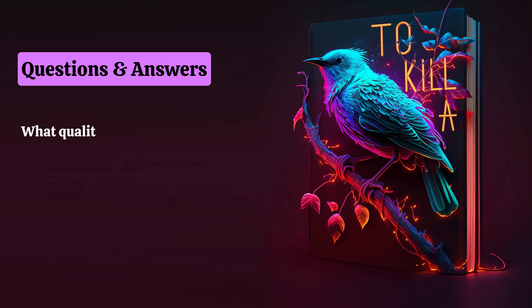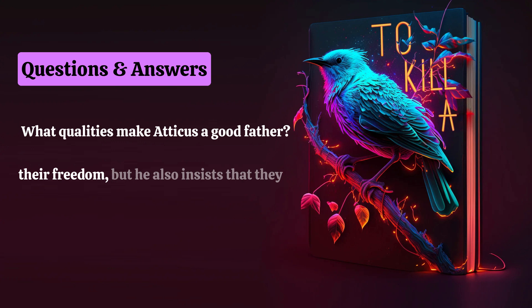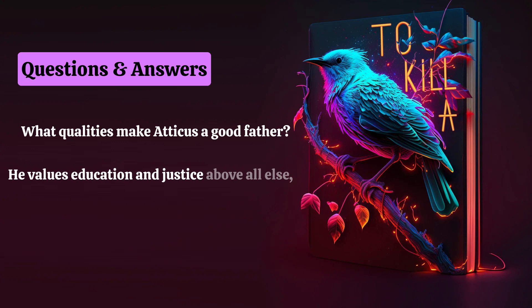What qualities make Atticus a good father? Although Atticus is an old father according to Scout, he dearly loves his children, Scout and Jem, and offers them a role model of integrity, wisdom, trust, and honesty. He lets them be children by giving them their freedom, but he also insists that they work hard and take care of each other. Atticus provides a good home and a strong caretaker in Calpurnia. He is a pillar of the community who is elected to the legislature every term unopposed. He values education and justice above all else, and he is open-hearted and open-minded.